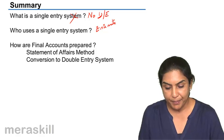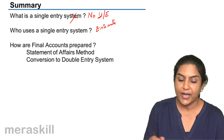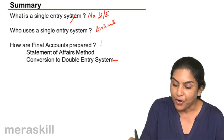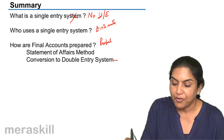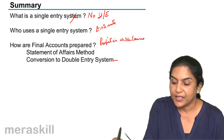How are the final accounts prepared? Actually, final accounts are prepared only under the conversion to double entry system. But how is profit, we may say, profit is ascertained. Profit is ascertained by two methods.